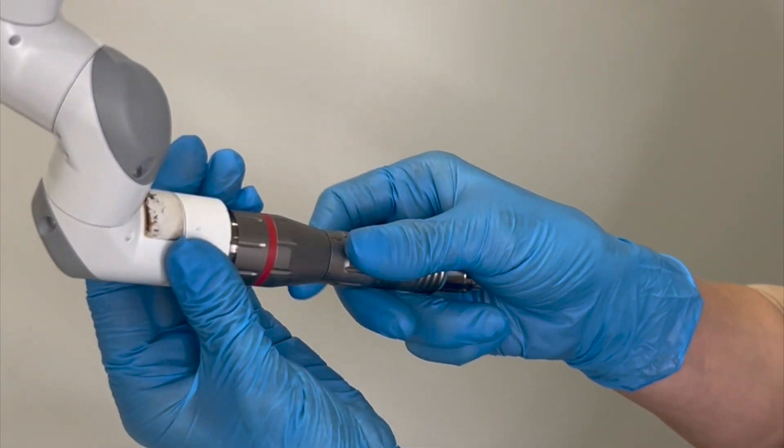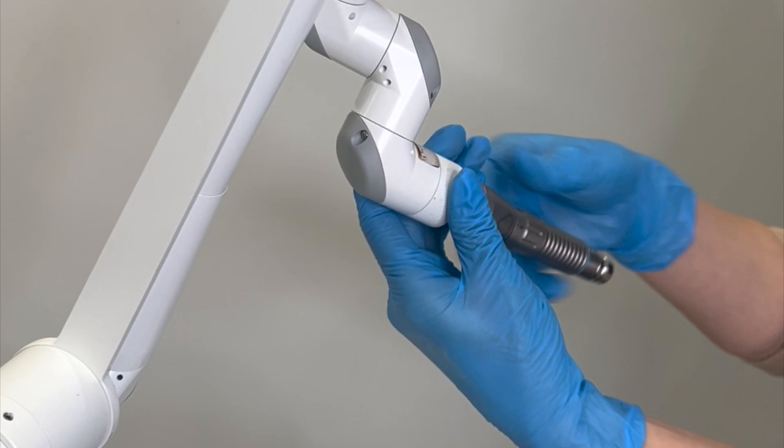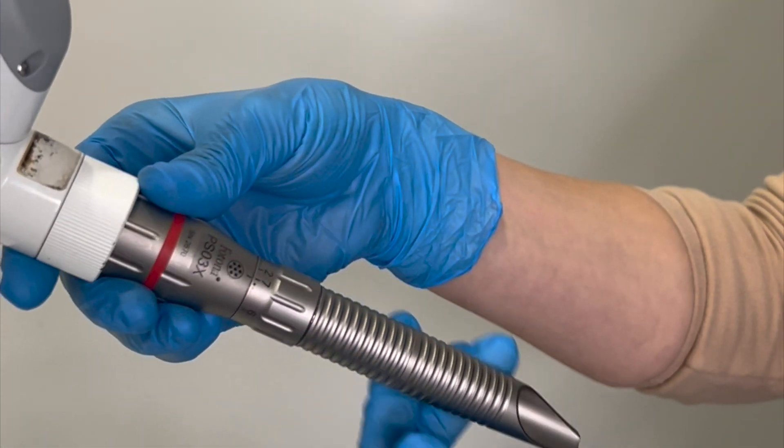For the smooth eye, we're attaching the PSO3X to the Erbium part of the laser and then attaching the end piece as well.